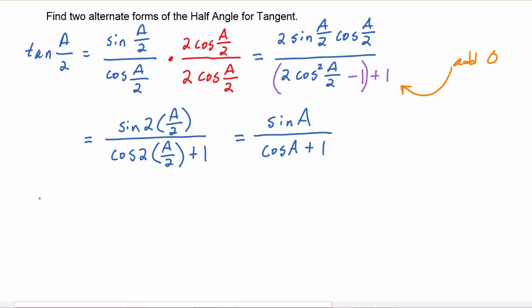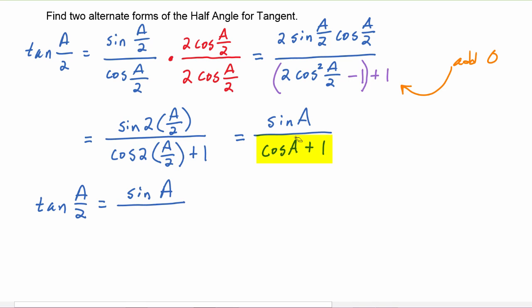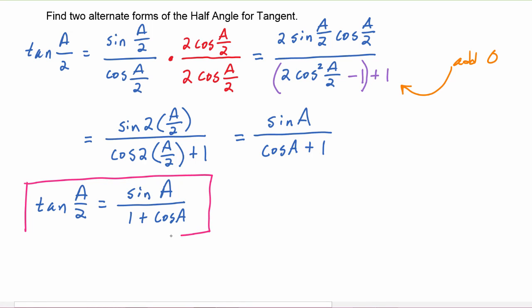This gives us an identity: tangent of a over two is equal to sine of a over one plus cosine of a. It is common to write the denominator as one plus cosine of a. This is the first alternate form of the half angle identity for tangent.